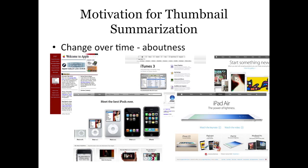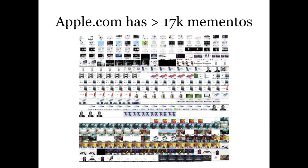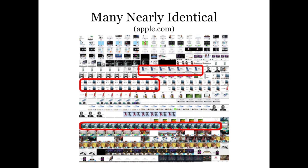In the case of Apple, it's changed drastically over maybe 20 years that it's existed. But if we try to do that for every memento we have — Apple has about 17,000 mementos in our archive alone, not counting other archives — trying to do this for all of those different screenshots is very expensive. There are also many redundancies, as you can see from the ones circled here. It's not necessarily useful to see these redundant mementos when you're trying to get a summarization of what the site has been about over time.